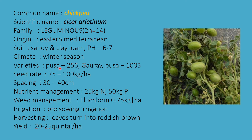Varieties are Pusa 256, Gaurav, and Pusa 1003. Seed rate is 75 to 100 kg per hectare, and spacing is 30 to 40 cm. Nutrient management is 25 kg N and 50 kg P applied in basal doses. Weed management uses fluchloralin (marketed as Basalin) at 0.75 kg per hectare. Irrigation is pre-sowing only. Harvesting when leaves turn reddish brown; yield is 20 to 25 quintals per hectare.